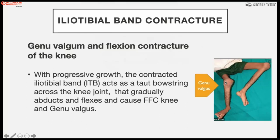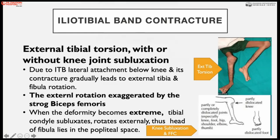The iliotibial band also produces external tibial torsion because of its pull on the tibia as it lies on the anterolateral surface over Gerdy's tubercle, with or without knee subluxation. This knee subluxation occurs in the chronic phase when quadriceps is paralyzed and hamstrings are strong, producing subluxation at the knee joint. Because of strong biceps, weak quadriceps, strong hamstrings, and iliotibial tract contracture, external tibial torsion is produced, which in extreme position leads to subluxation.